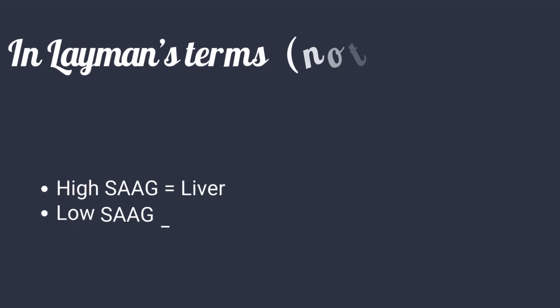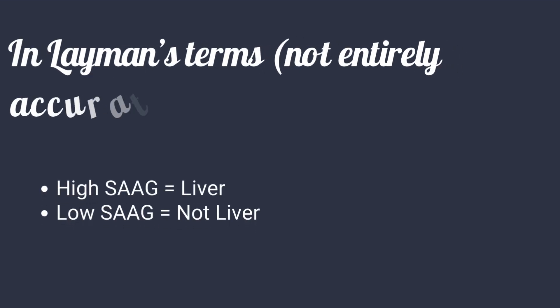In layman's terms, though not entirely accurate: high SAG involves the liver as the cause, while low SAG means that the liver is not the cause.